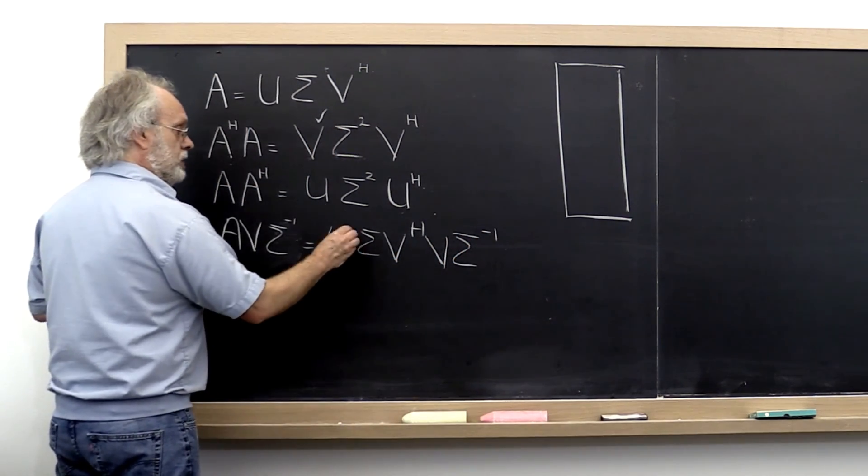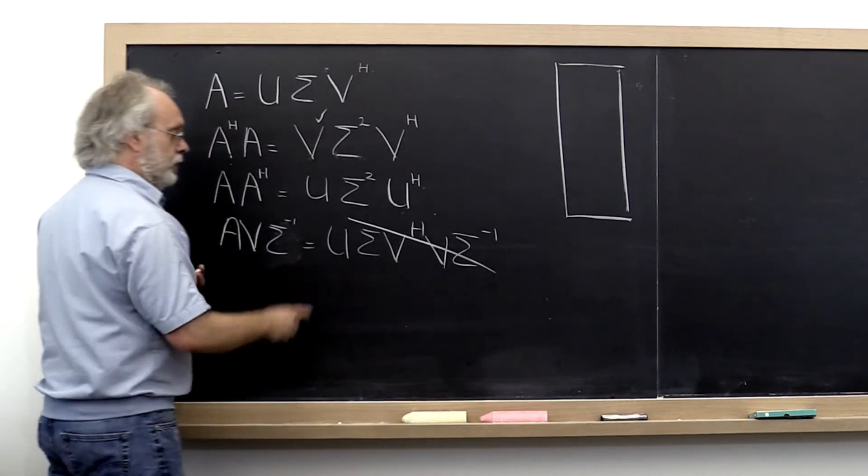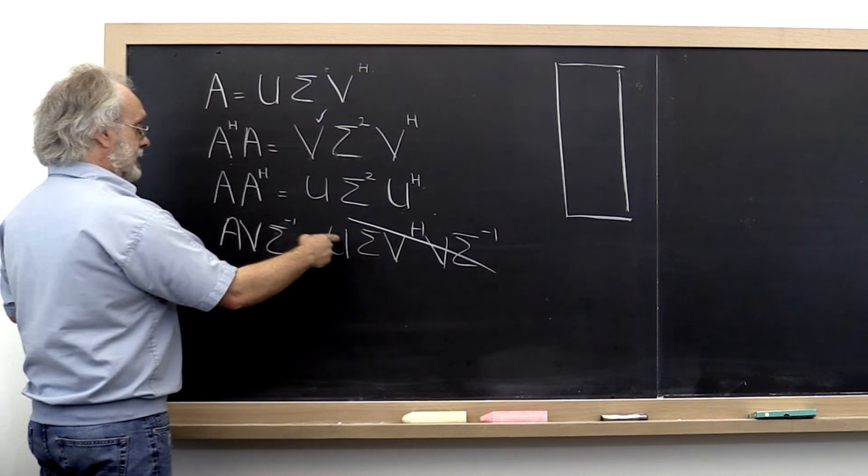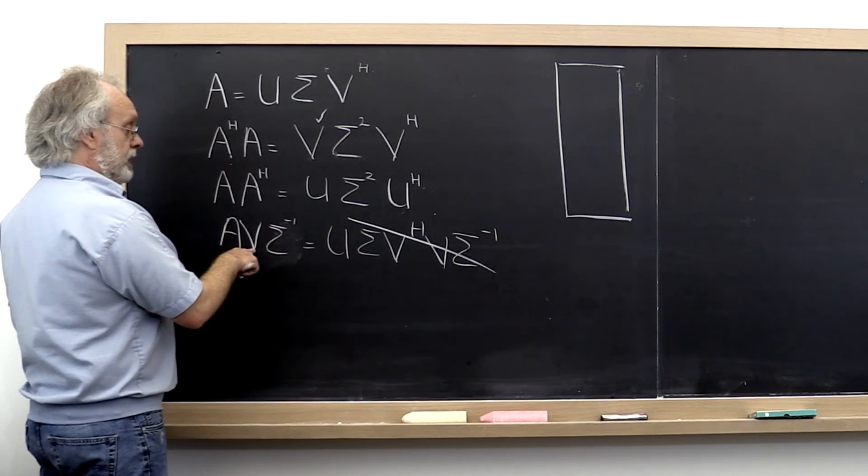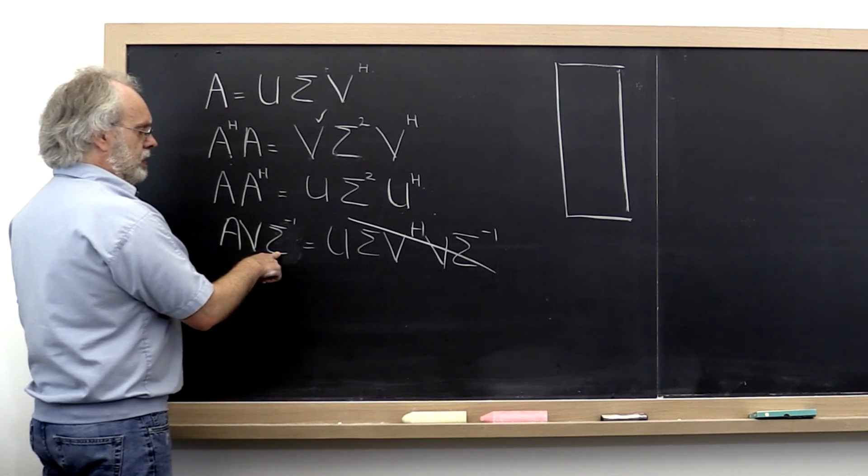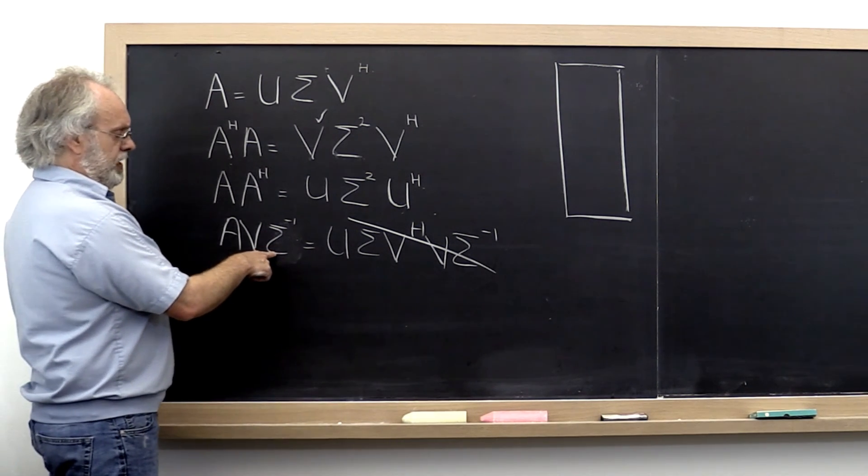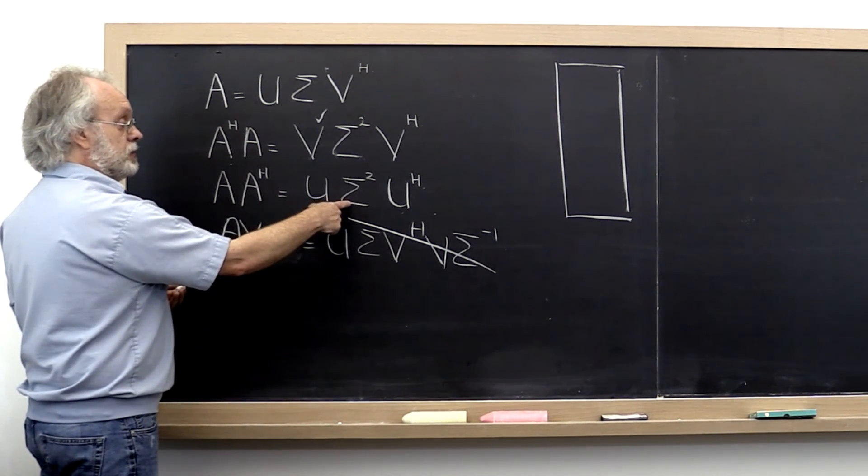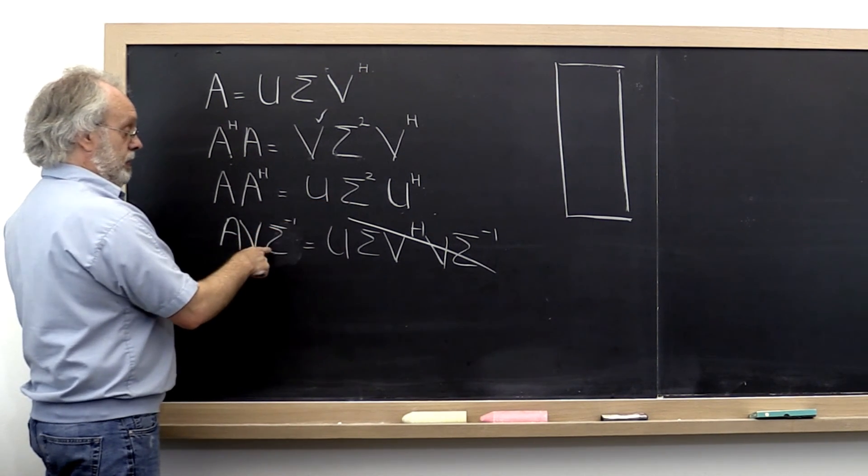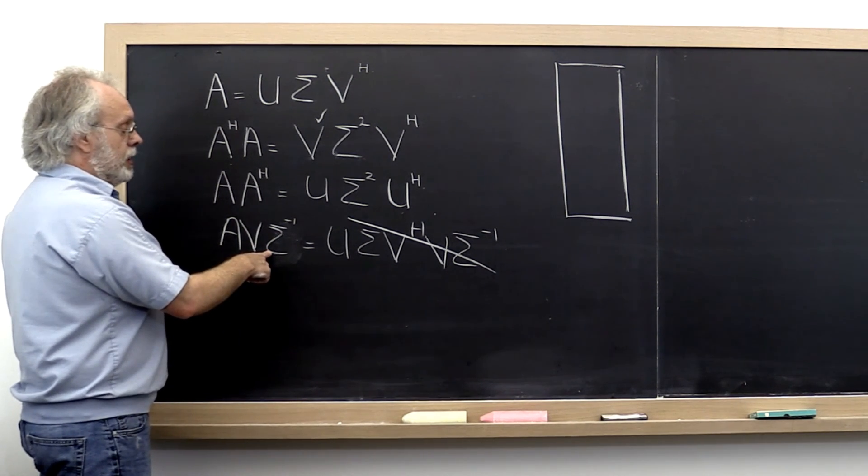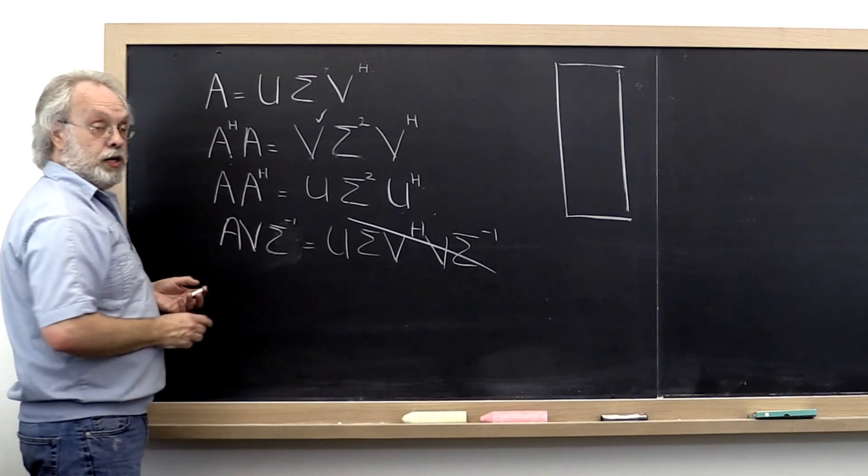We can compute U as A times V times Sigma inverse. This gets problematic if some diagonal elements of Sigma are zero, because then Sigma is singular. But let's not worry about that for now.